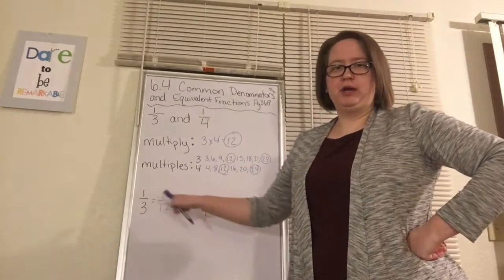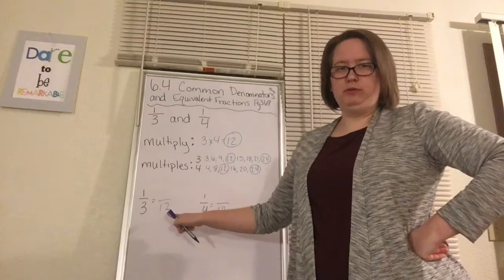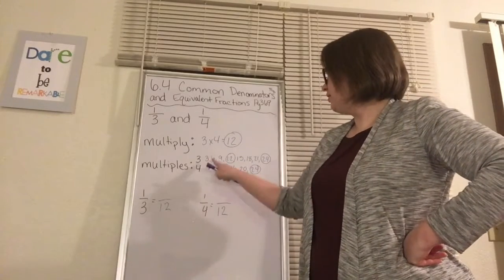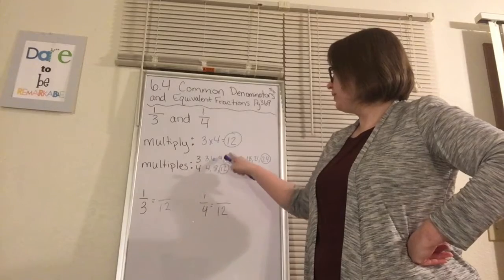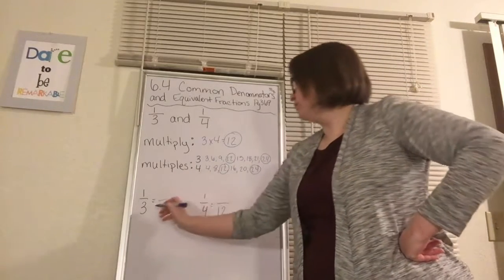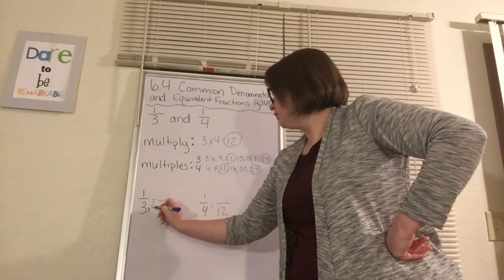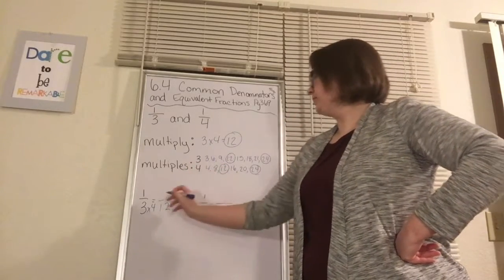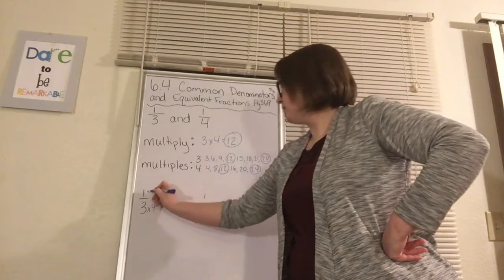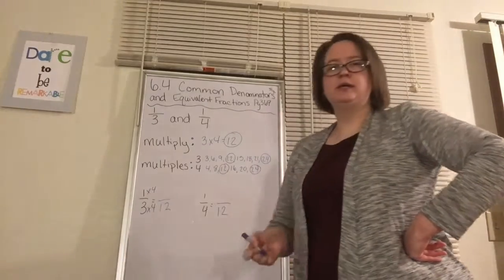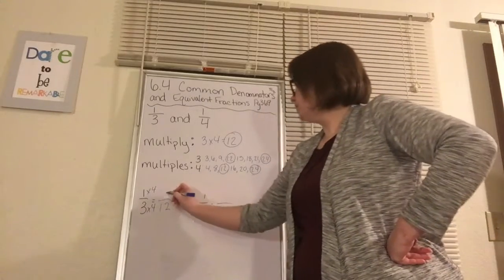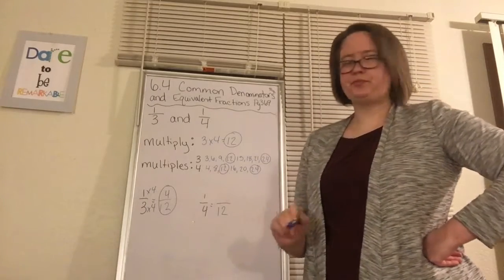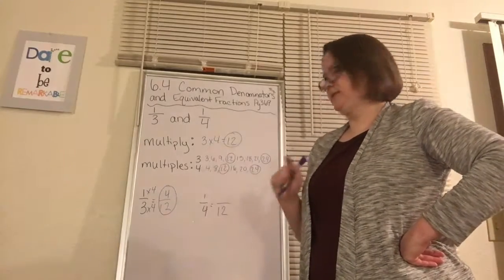So, what do we do to 3 in order to get 12? I like to use the multiples list — I can look and see 3, then count: 1, 2, 3, 4. I multiply it by 4. And whatever I do to my denominator, I have to do to my numerator. So I have to multiply my 1 by 4. 1 times 4 is 4. So I get 4/12. 1/3 is equal to 4/12.